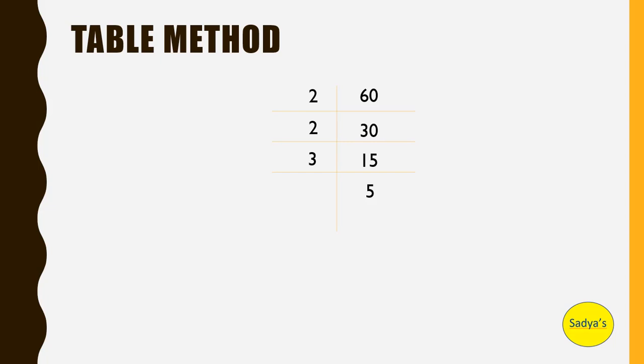Which is the next prime number after 3? It is 5. So 5 divided by 5 gives us 1. So we keep on doing this division process until we get 1. Now are we done with the prime factorization? No, not yet.